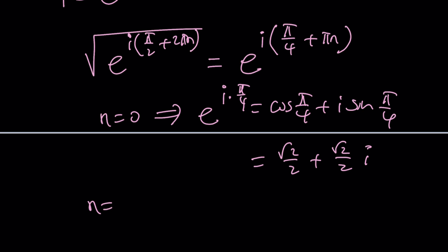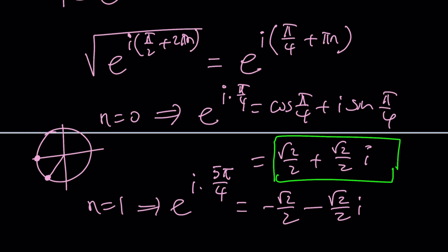And if n is equal to 1, then we get e to the power i times 5 pi over 4. And if you think about 5 pi over 4, this is pi, and that'll be that. So this would be negative root 2 over 2 minus root 2 over 2 i. But again, if you're looking for the principal square root, that should be this one.